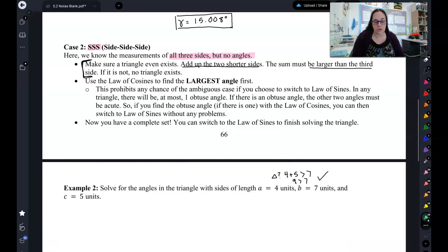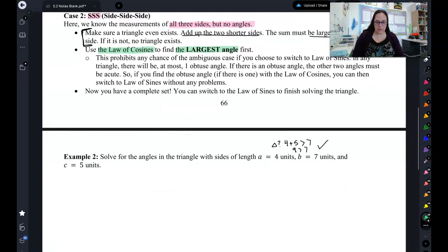Now, let's talk about if a triangle does exist. We're going to use the law of cosines to find the largest angle first. This is because there is no ambiguous case with the law of cosines. Use the law of cosines to find the obtuse angle, because then you can switch over to the law of sines to find all the other ones, because you don't have to worry about any ambiguous case after that. Basically, general rule, never use law of sines to find an obtuse angle. Use the law of cosines to find the obtuse one. Then you can use law of sines to find the rest of them. Then you can switch to the law of sines to finish solving the triangle.